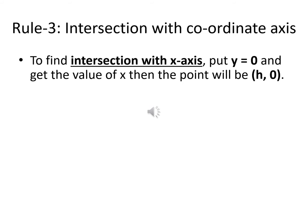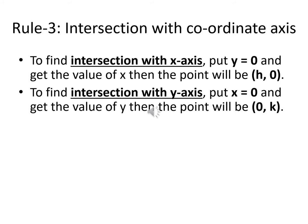Now rule three: intersection with coordinate axes. For intersection with the x-axis, since the x-axis equation is y = 0, put y = 0 in your equation and find the values of x. If you get a real value other than 0, say h, then the point is (h, 0). If x = 0 you get the origin which we already discussed. If x is complex or imaginary, that point does not lie on the curve — we discuss only real points. Similarly for the y-axis, put x = 0 and find y; if you get a real value k other than 0, the point is (0, k).